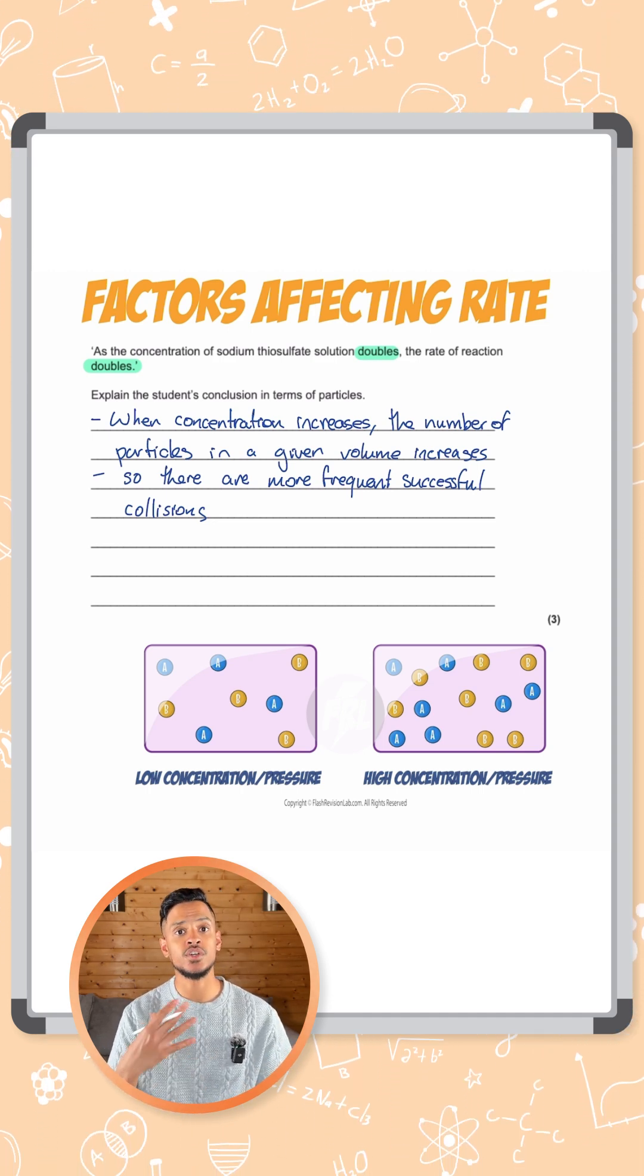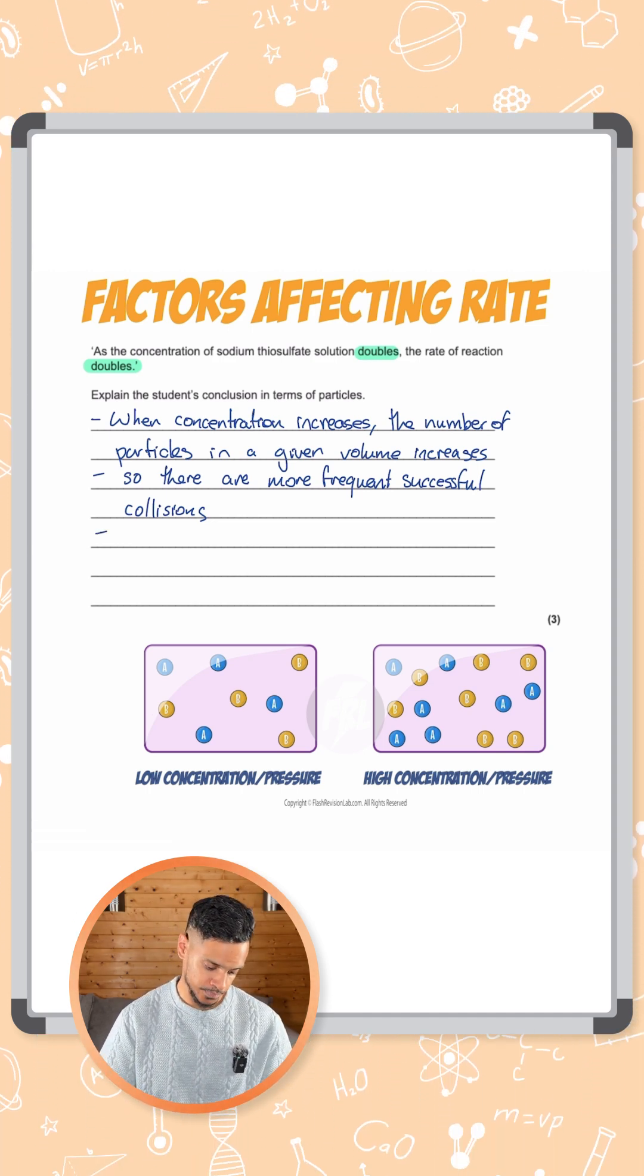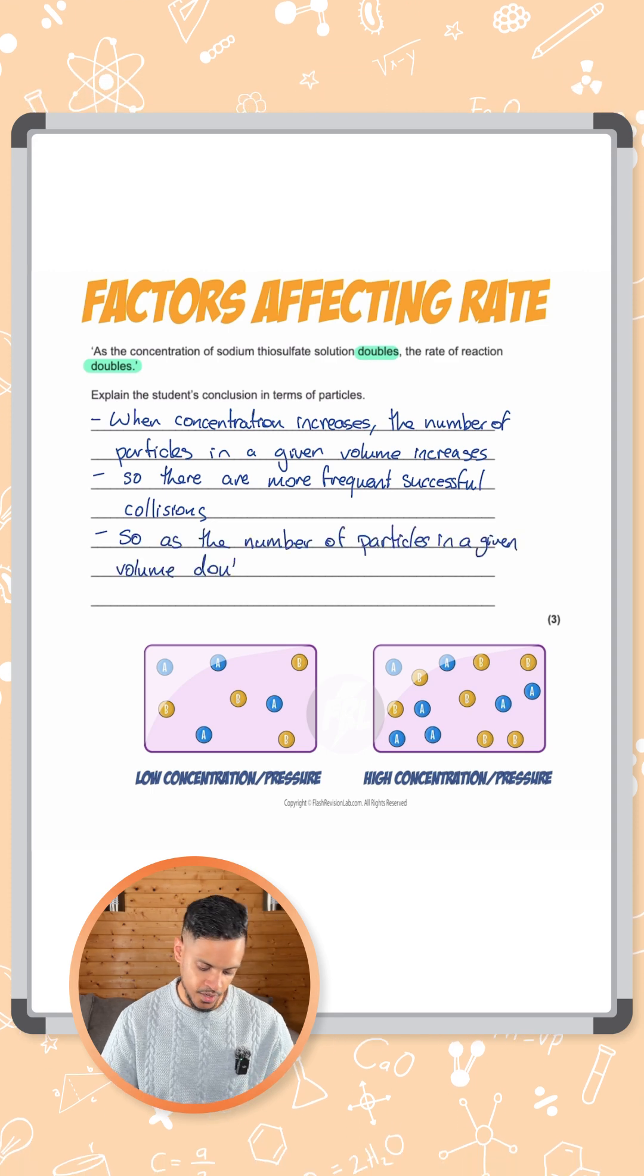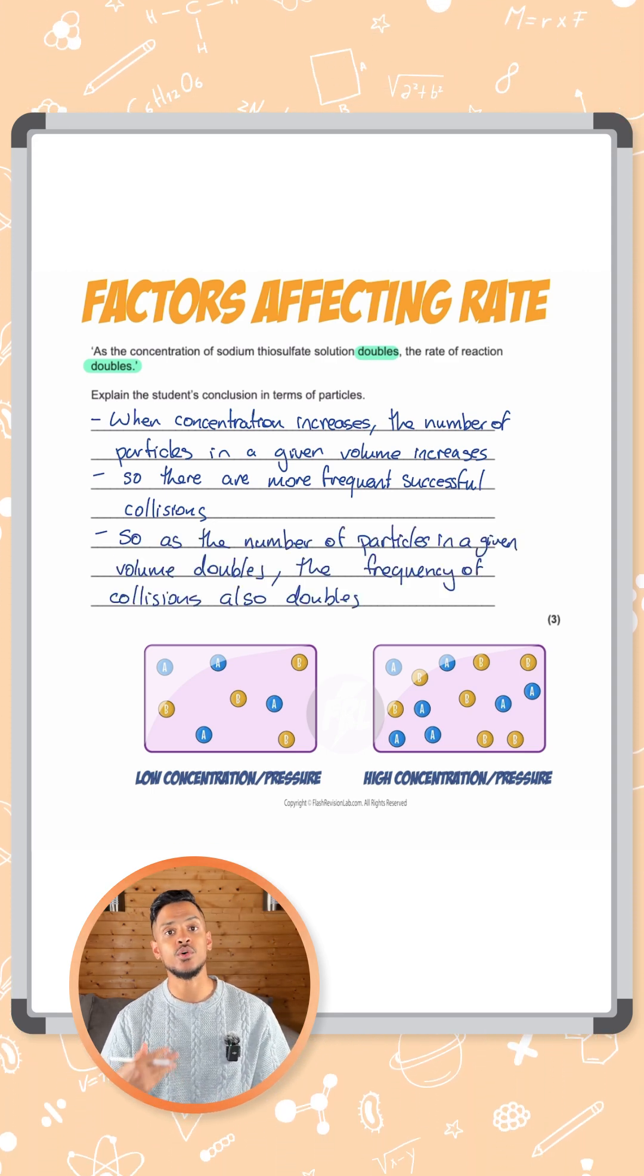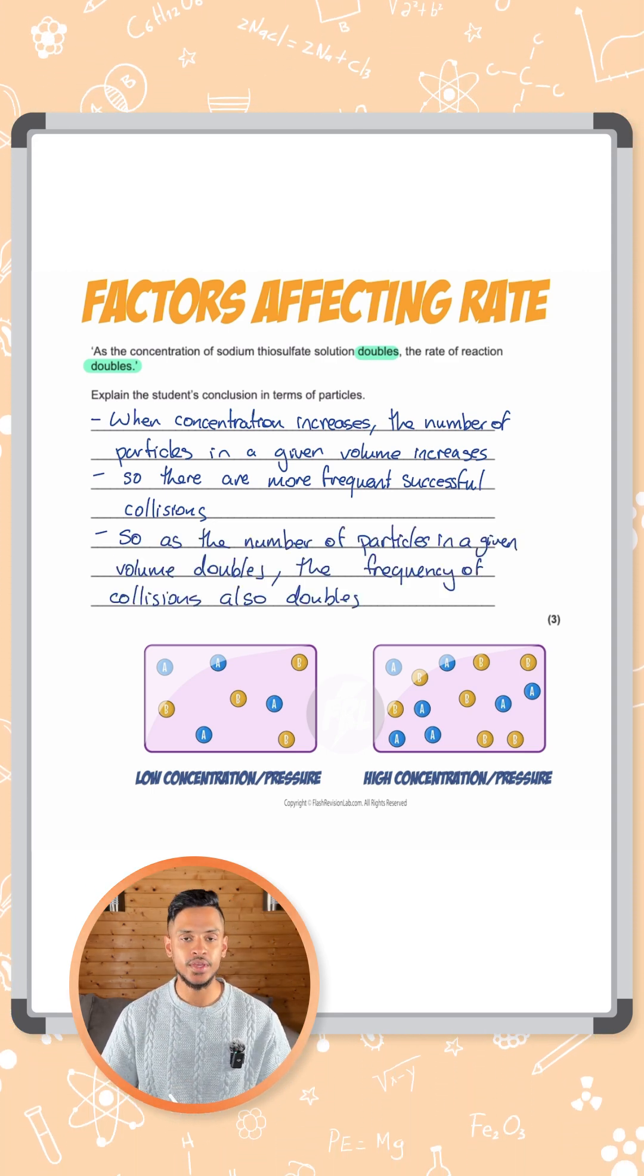Now let's apply this to doubling the concentration. So we can say, as the number of particles in a given volume doubles, the frequency of collisions also double. That's how you get three marks there.